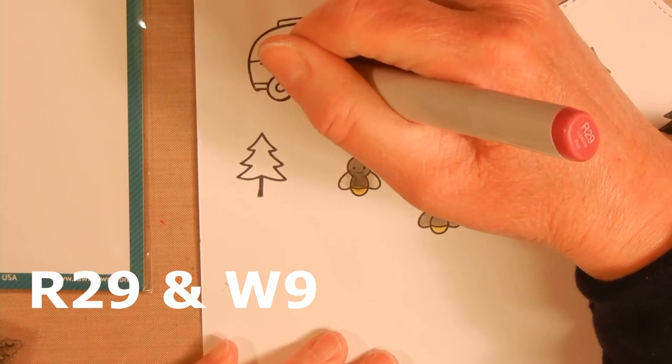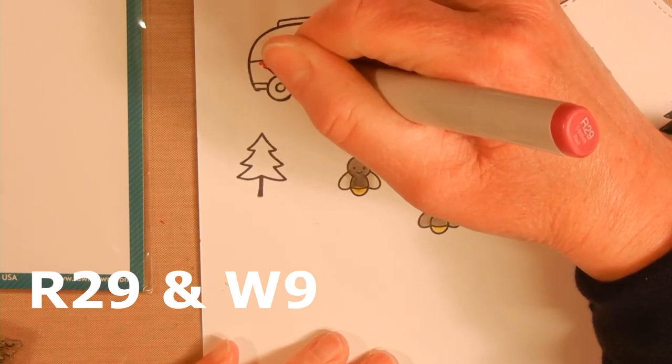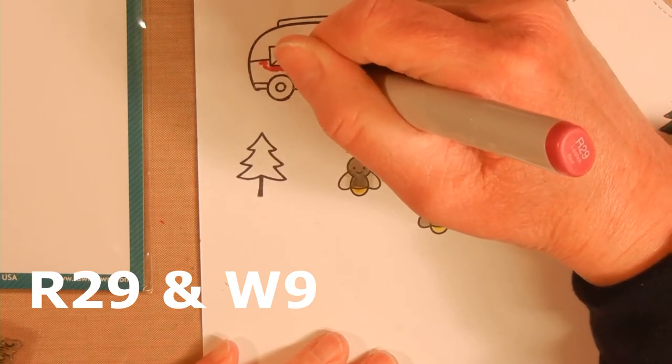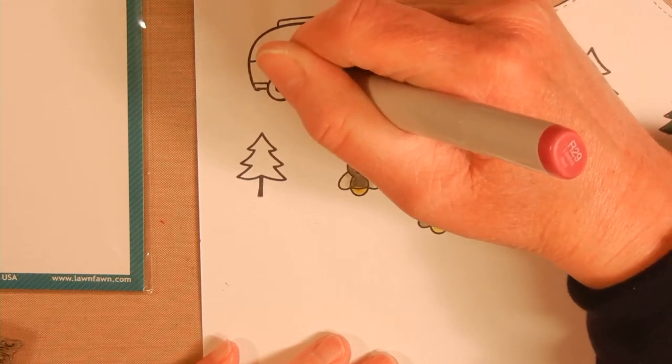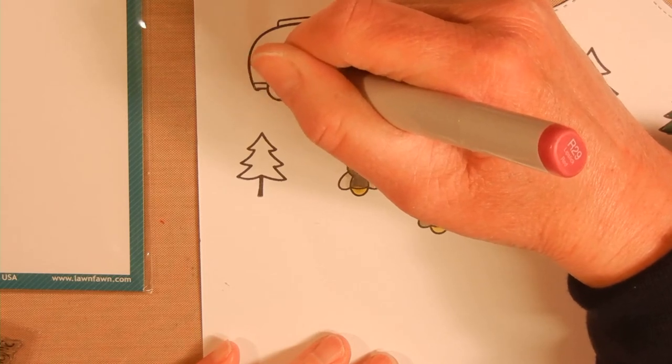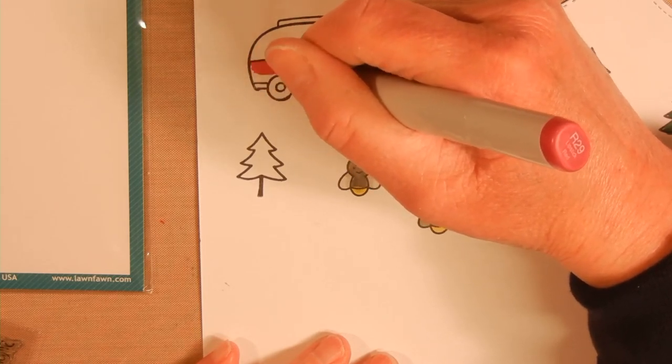For the camper I didn't want it to be a bright red and I didn't really have a dark grayish type red. So I used R29 and then I kind of thought, well, the middle of the camper and the top will be a little bit lighter because that's where the moon is shining, and the sides and the bottom will be a little darker.